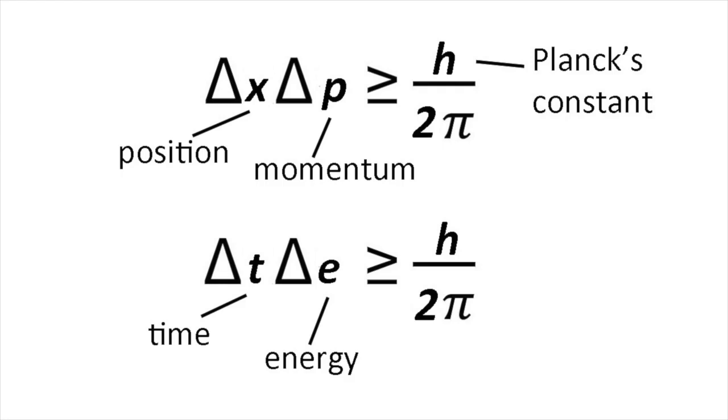The more accurately we try to pin down one of the pair of properties, the less accurately we can measure the other. The result of multiplying the uncertainties in each case is always greater than a certain minimum quantity.